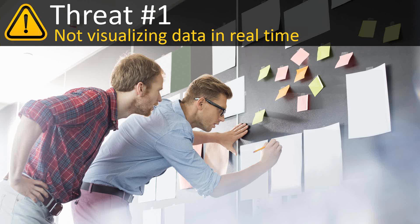Lean is big on visibility. Even back in the early days of my experience in manufacturing, we had old-fashioned andon boards — just red, yellow, and green lights throughout the facility. Not visualizing data in real time is certainly a threat to your overall manufacturing productivity. OEE and all productivity metrics require up-to-the-minute information. The calculation of OEE — availability, quality, and performance — does me no good if I only know yesterday's numbers. Yesterday's news or this morning's report don't help much in manufacturing.